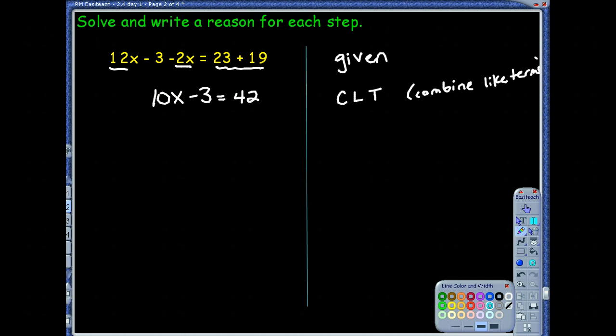Another reason that is acceptable is if you said simplify, because you're in a sense simplifying that particular side. But I'm kind of a big fan of CLT. What would you do next? I'm going to add 3 to both sides. So you would have 10x equals 45. And I'm going to put APO as my reason. And for the last step? I'm going to divide by 10 on each side. So x would equal 4.5, you could say 9 halves. But since it's an exact decimal, I'm good with that. So DPO.